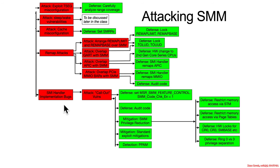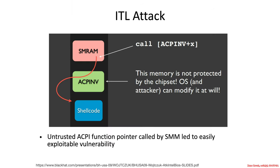The key point is that there can be all sorts of different implementation bugs, but through looking at the different research that's come out over time, we can categorize them into a couple of buckets. This is the first bucket: callout vulnerabilities. The idea is that SMRAM is supposed to be this isolated area that no attacker can breach and get into.